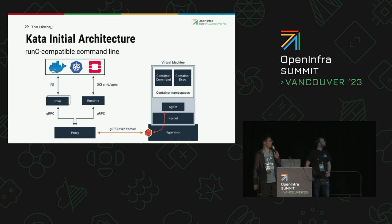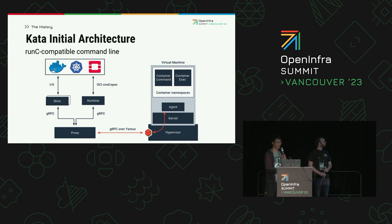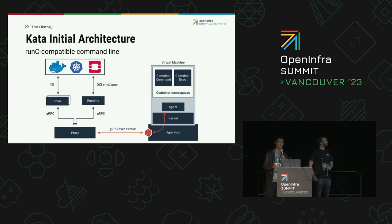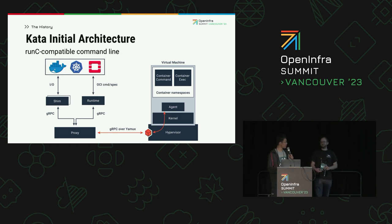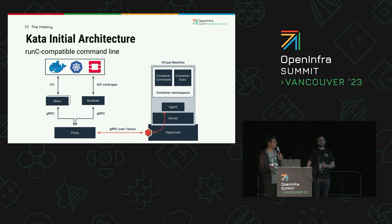This is the initial Kata Containers architecture. The idea is that Kata Containers is a drop-in replacement for runc. There are many components: a Kata shim that is essentially like a containerd shim, a Kata runtime as a command line interface like runc, a proxy to allow us to talk to the virtual machine via a virtual port, a Yamux multiplexer, and a Kata agent inside the virtual machine to actually spawn the containers inside it.